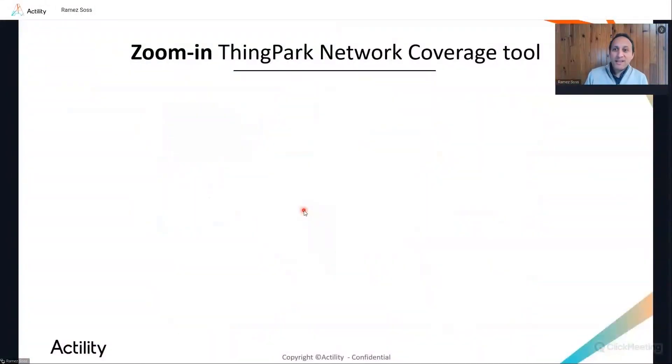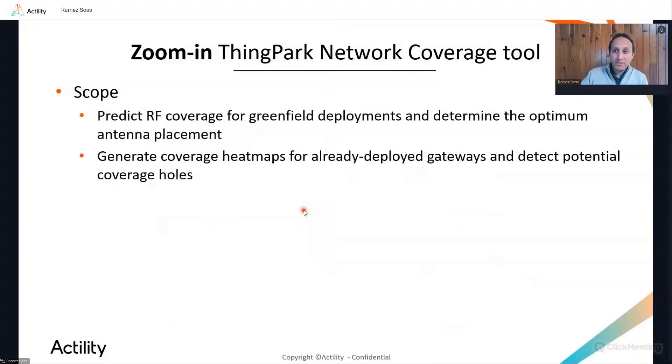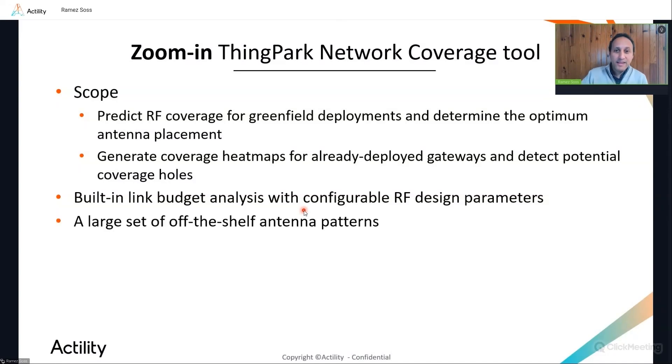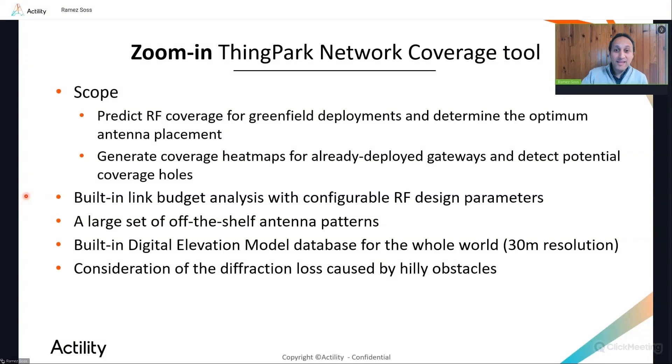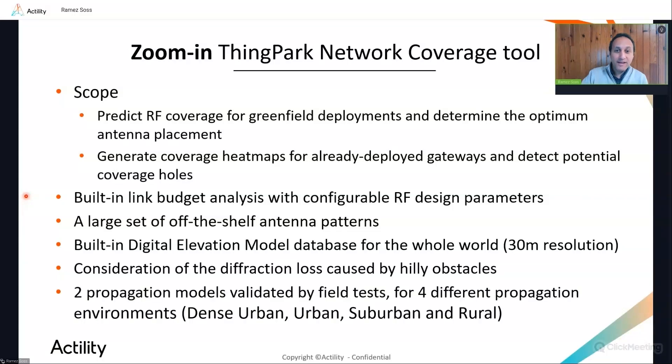Let me now zoom in on ThinkPark's network coverage tool, which is Actility's RF coverage prediction tool used in radio network planning for outdoor macro gateways. It's not suitable for coverage prediction of indoor gateways. This tool already embeds the link budget analysis, so it addresses both steps one and two of the methodology presented earlier. The tool also supports a large set of antenna patterns from the most deployed antenna manufacturers in the LoRaWAN ecosystem. Additionally, the tool embeds a digital elevation model database covering the whole earth with 30 meter resolution. And this DTM allows the tool to compute the diffraction loss caused by hilly obstacles to model the terrain shadowing effect. And finally, the tool supports two propagation models, one modeling a conservative or a safe prediction scenario, and another one modeling an optimistic prediction scenario.